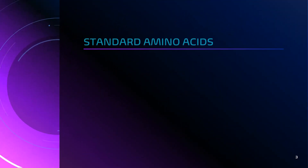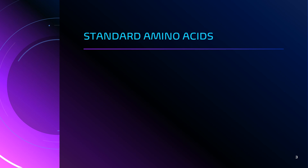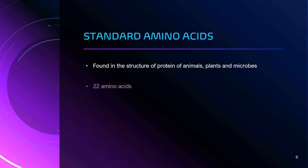First of all, let's understand what standard amino acids are. As many as 300 amino acids occur in nature. Of these, only 22 are known as standard amino acids, and they are repeatedly found in the structure of proteins isolated from different forms of life — animals, plants, and microbes.